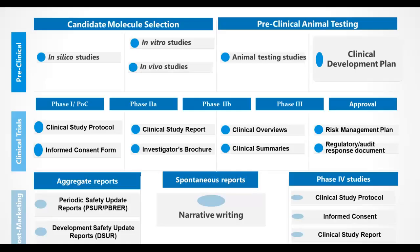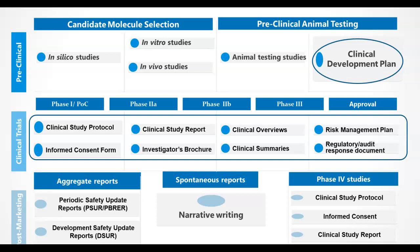In this video we have discussed the scope of medical writing in clinical research. We have looked at what a clinical development plan is, the documents required at the start of a clinical trial, when results are available, and which documents are required after the trial is completed. In future videos we will look into post-marketing documents listed on this slide. We thank you for your time and hope you find this video useful. Thank you and have a nice day.